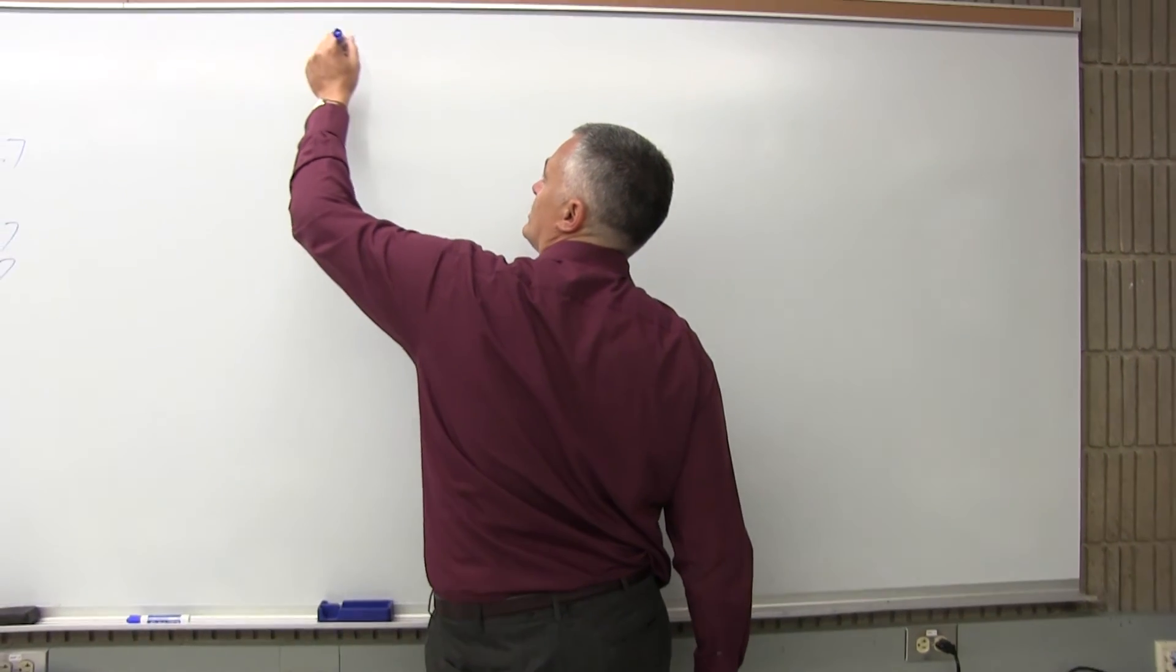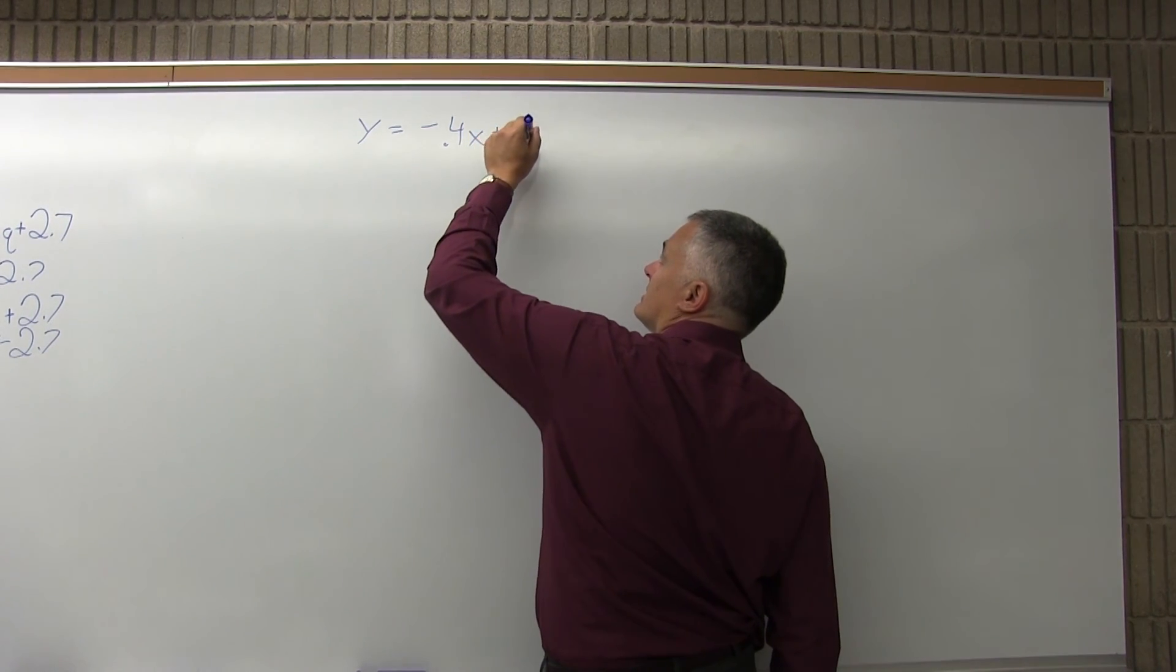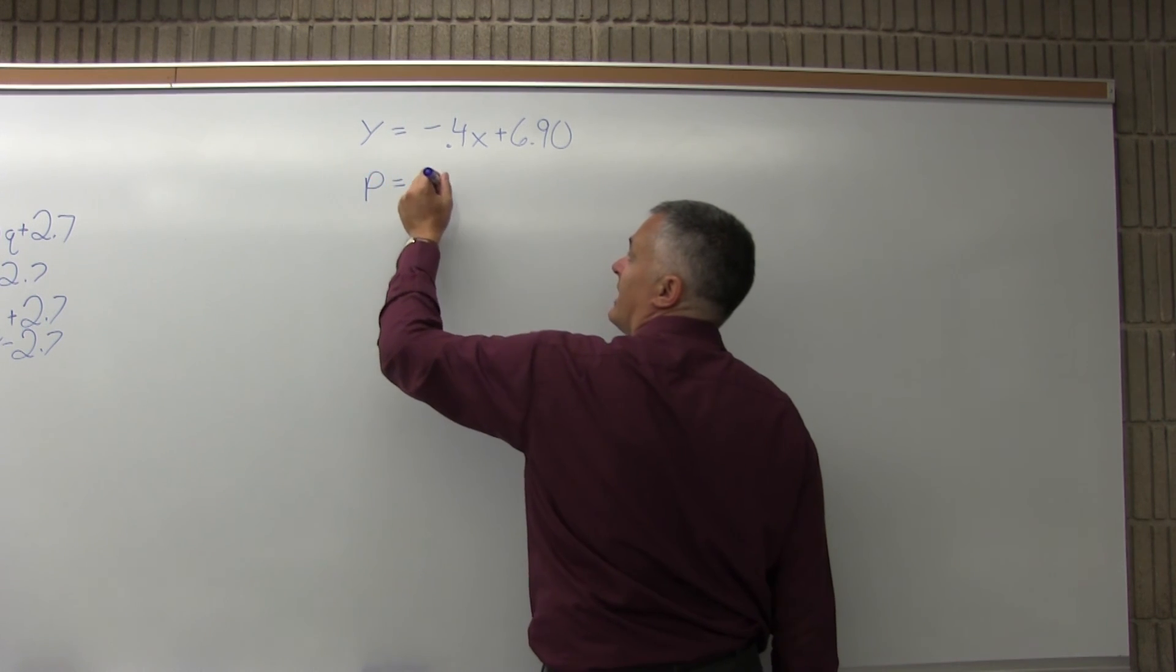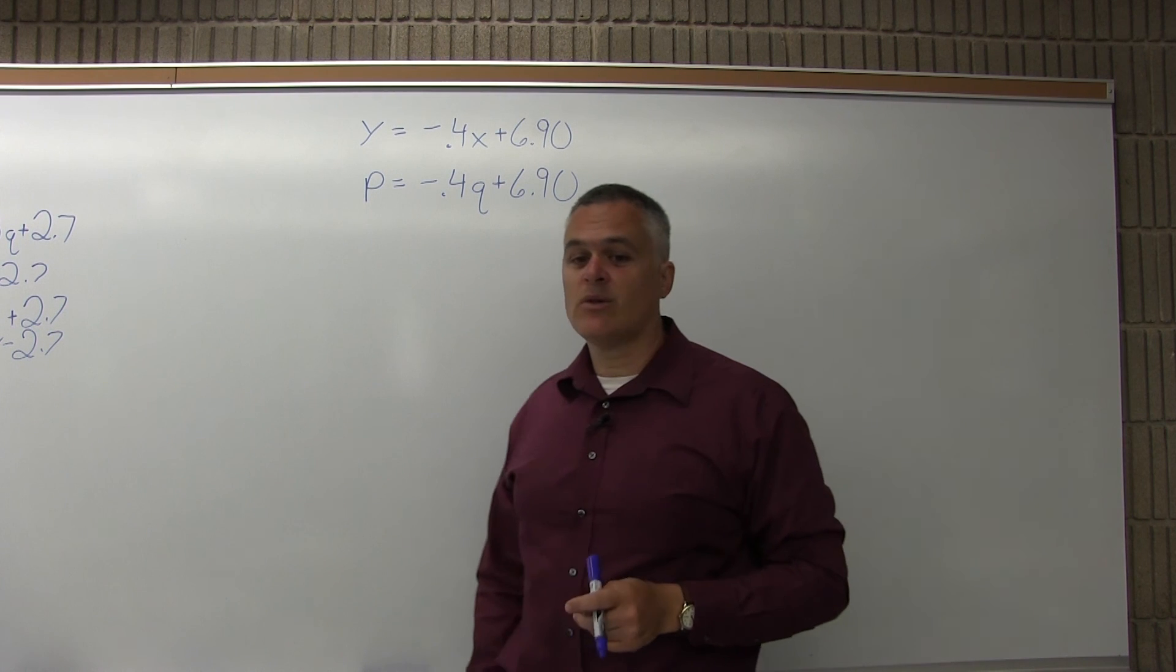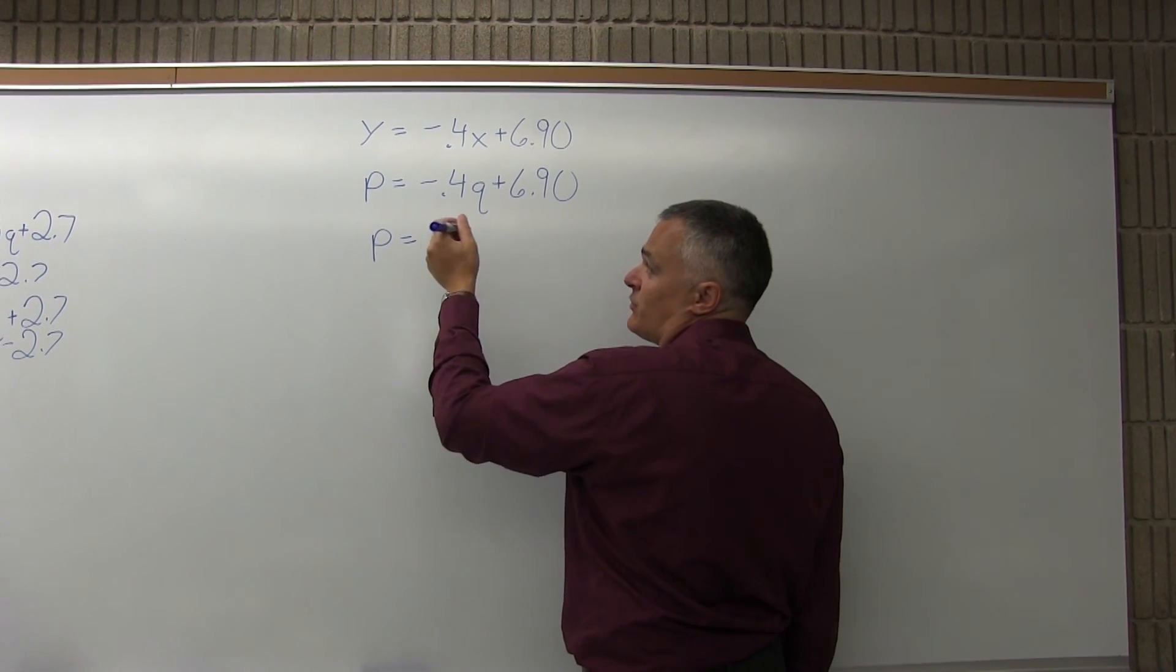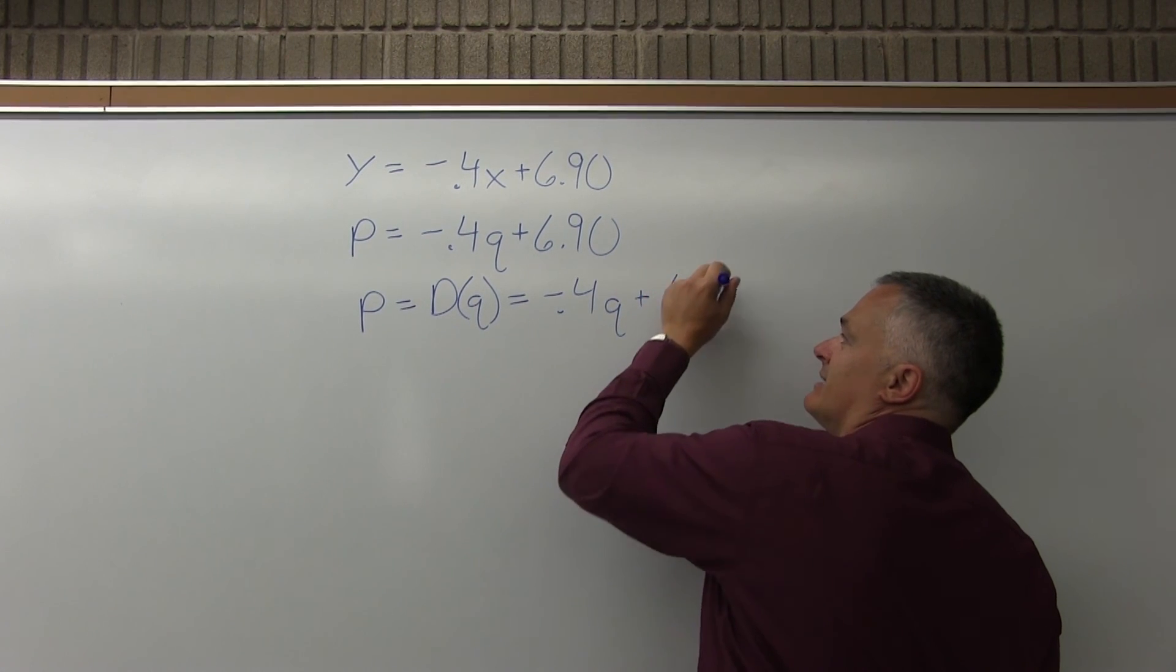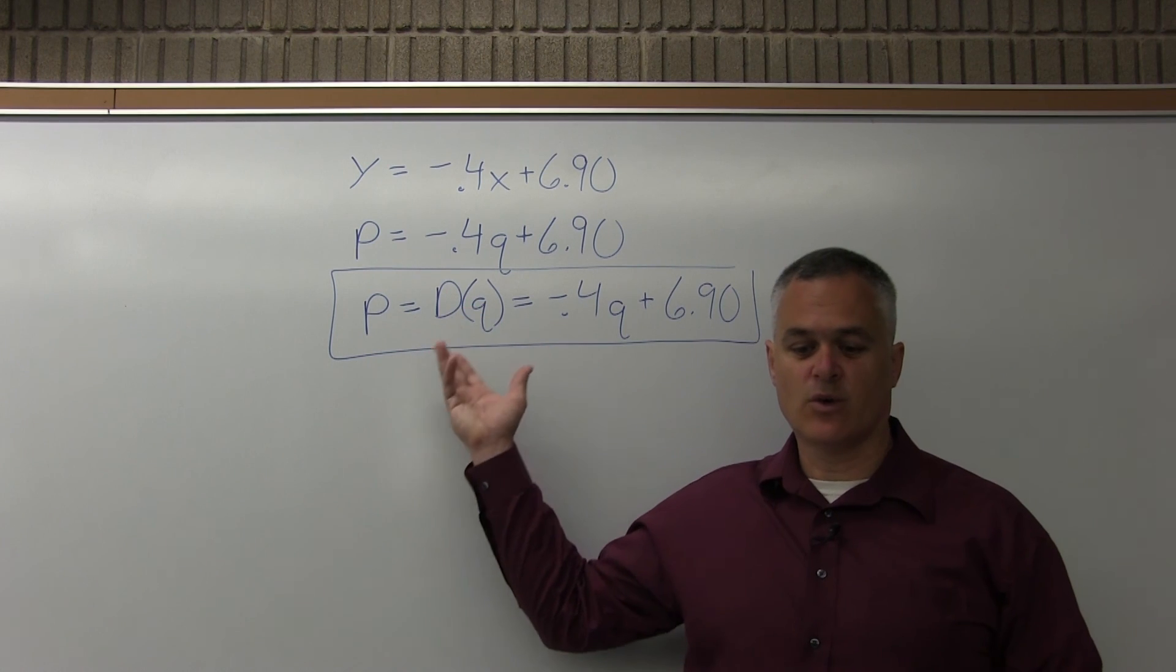To really do a nice job, I should switch the Y to P for price and X to Q for quantity. P equals negative 0.4Q plus 6.90. If you want to make it look like a math book, add D(Q) to designate this as a demand equation: P equals D(Q) equals negative 0.4Q plus $6.90. That's the final answer, the demand equation.